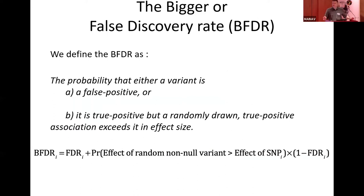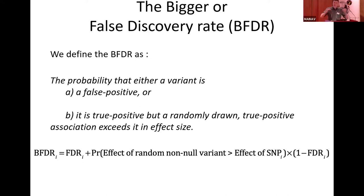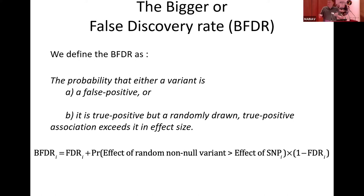We developed the concept of the Bigger or False Discovery Rate (BFDR). This is an extension of the FDR, defined as the probability that a variant is either a false positive, or a true positive whose effect size is exceeded by a randomly drawn true positive association from anywhere on the chip. This controls two separate error rates: the hit is not associated with disease, or it is associated but has an unremarkable effect size consistent with the polygenic background.